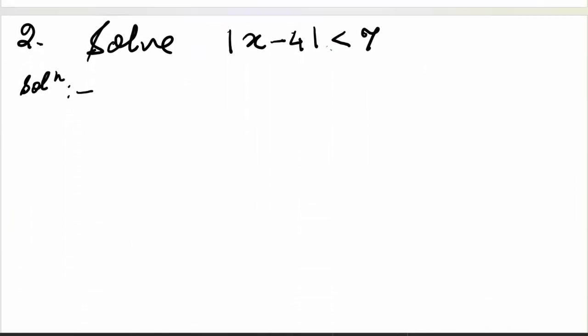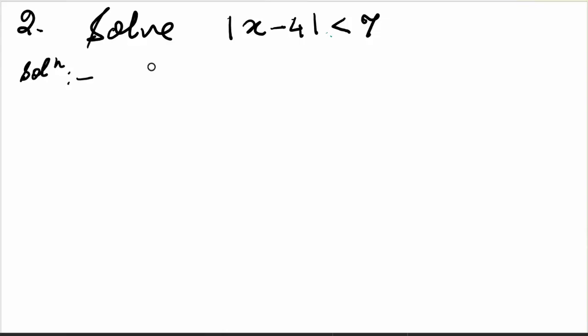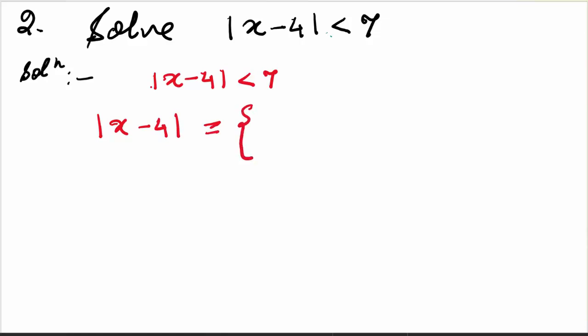Come to the second question. In the second question, you are given a strict inequality. Now what do we mean by strict inequality? Here we have mod of x minus 4 is less than 7. There is no equality — whenever we have either less than or greater than sign only, we call them strict inequalities. Again, we will take two cases. Mod of x minus 4 will once be taken as x minus 4, and in the second one, as minus of x minus 4.